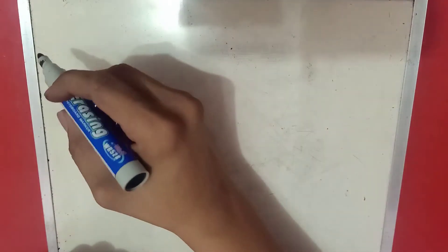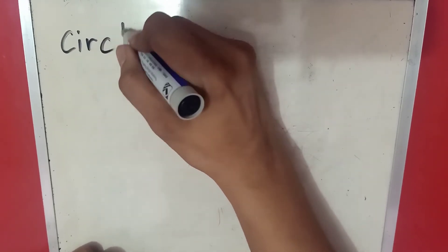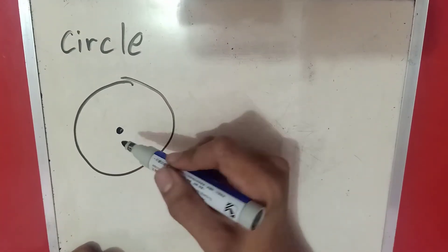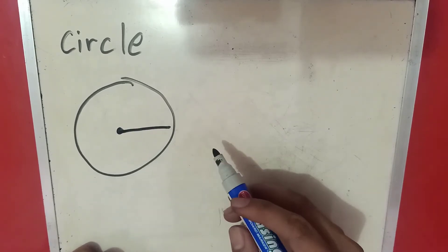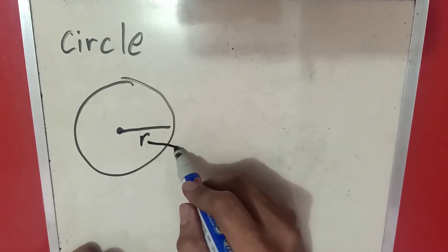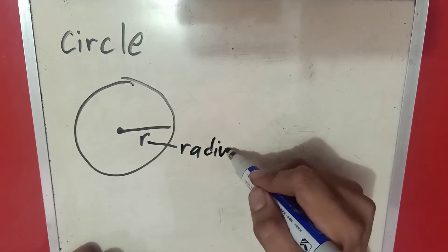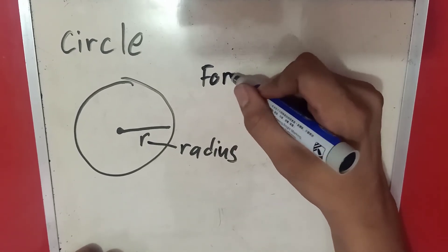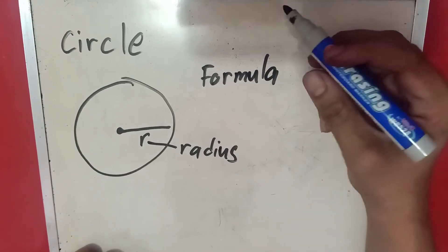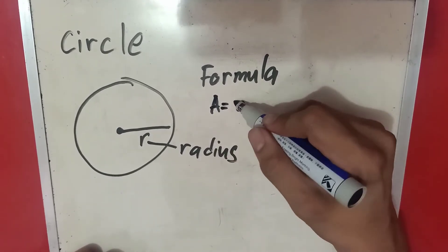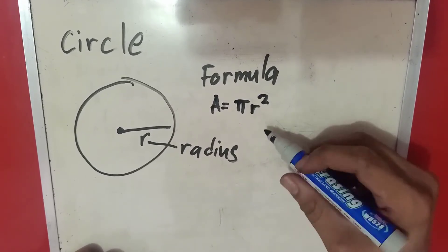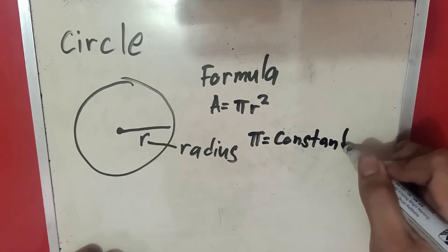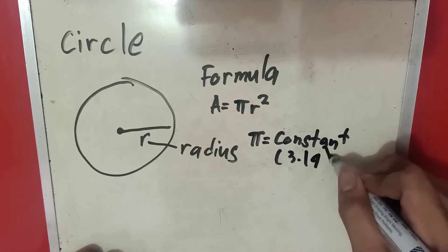Now let's proceed to the second geometric figure, which is the circle. A circle has a center and it also has a radius. The radius is a line from the center to the endpoint of the circle. The formula to find the area of a circle is: area equals pi times r squared. Pi is an infinite number, but we're going to use the constant value of 3.14.